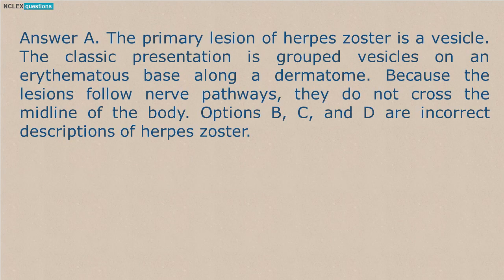The primary lesion of herpes zoster is a vesicle. The classic presentation is grouped vesicles on an erythematous base along a dermatome. Because the lesions follow nerve pathways, they do not cross the midline of the body. Options B, C, and D are incorrect descriptions of herpes zoster.